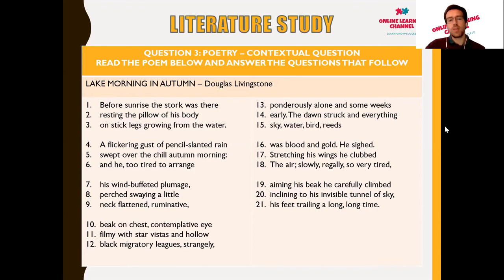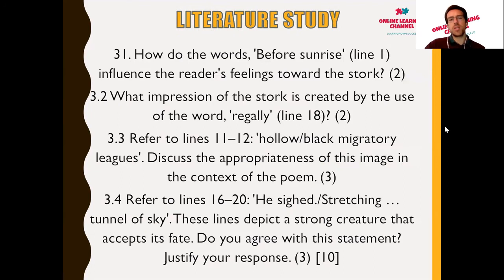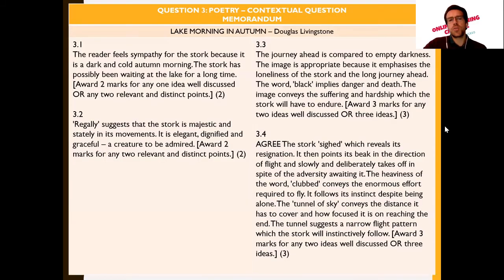'And some weeks early the dawn struck, and everything — sky, water, bird, reeds — was blood and gold. He sighed, stretching his wings; he clubbed the air slowly, regally, so very tired, aiming his beak, carefully climbed inclining to his invisible tunnel of sky, his feet trailing — a long, long time.' Question 3.1 asks how the words 'before sunrise' in the first line influence the reader's feelings towards the stork. The reader could feel sympathy for the stork because it's dark and a cold autumn morning — the stork has possibly been waiting at the lake for a long time.